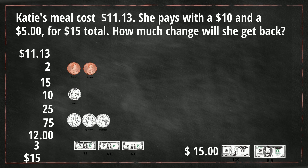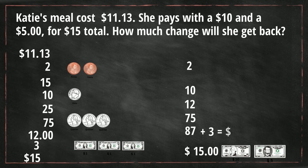So let's total up what we gave her back. We gave her two cents plus a dime — that's 12 cents — plus three quarters, which is $0.75. Total that, that becomes $0.87. And then we gave her $3 in bills. So we gave her $3.87 in change.